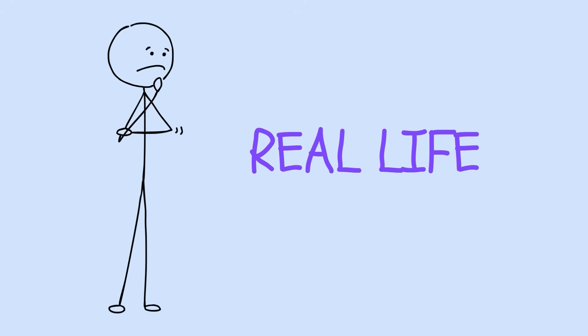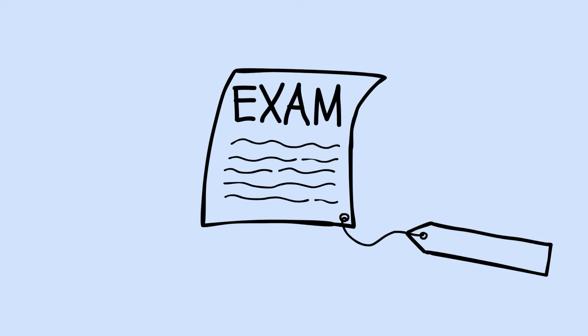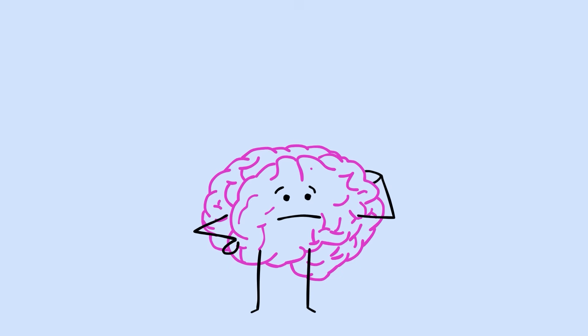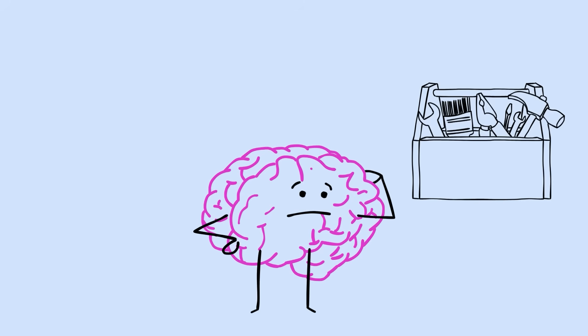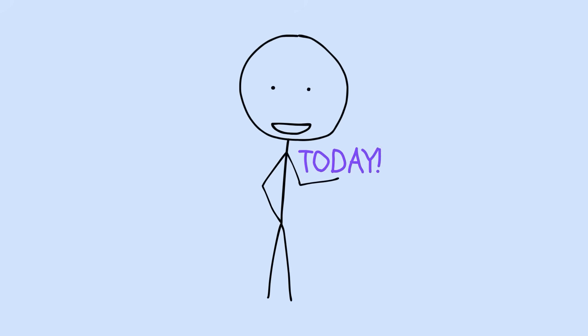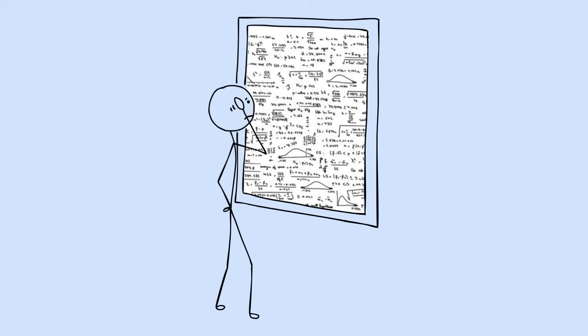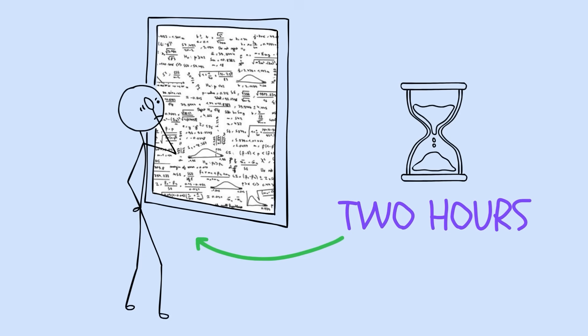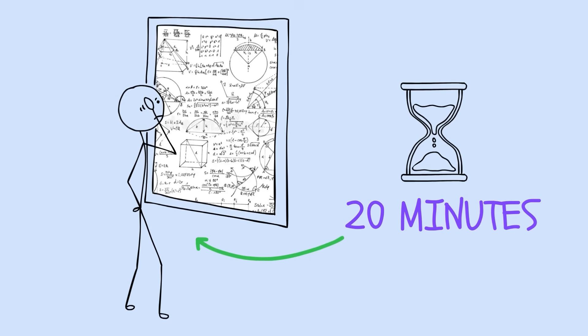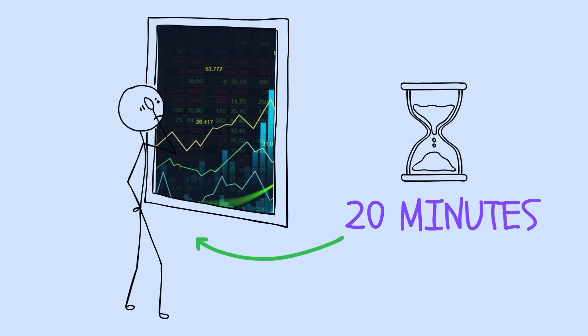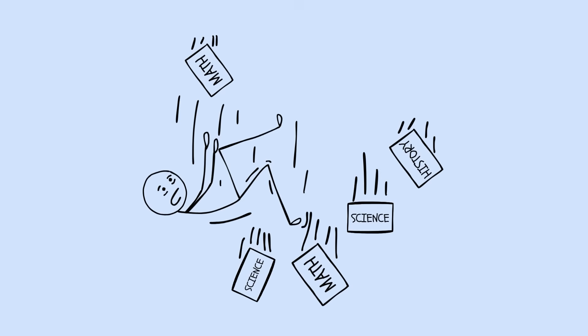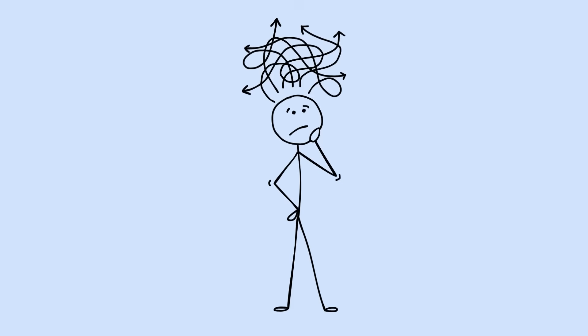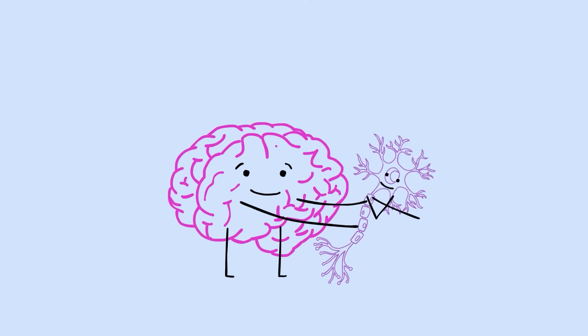Think about real life. Exams don't come with labels saying this is a calculus problem or this is a physics problem. Your brain needs practice recognizing which tool to use and when. You can start this today. Instead of studying algebra for two hours straight, spend 20 minutes on algebra, 20 on geometry, 20 on statistics, then repeat. It feels messy at first, but that confusion is your brain building stronger, more flexible connections.